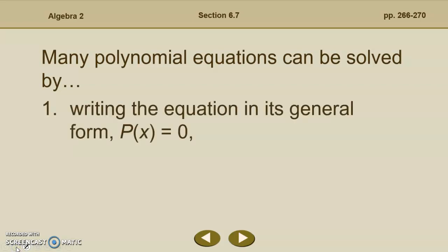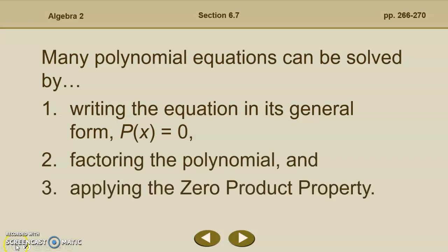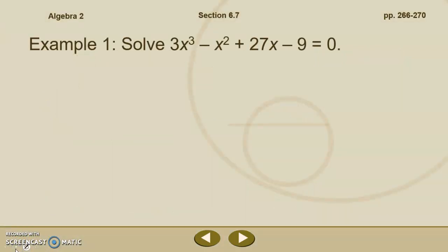Many polynomial equations can be solved by writing the equation in its general form p of x equals 0, just like we did with quadratics, then factoring the polynomial, and applying the zero product property. Remember, the zero product property says that if a times b equals 0, then a must equal 0 or b must equal 0 — they could both equal 0. So we can set our two factors equal to 0.